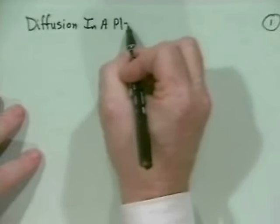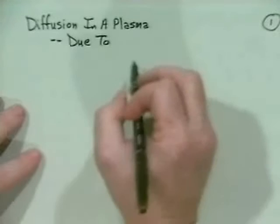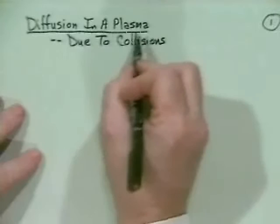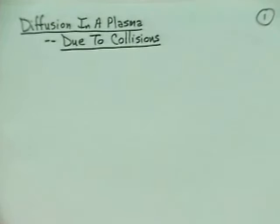Last time we talked about one effect of collisions in a plasma: electrical conductivity and resistivity. Today we want to talk about particle diffusion, heat diffusion, and so forth — basically diffusion in a plasma — mostly due to collisions of electrons and ions with neutrals and with each other.